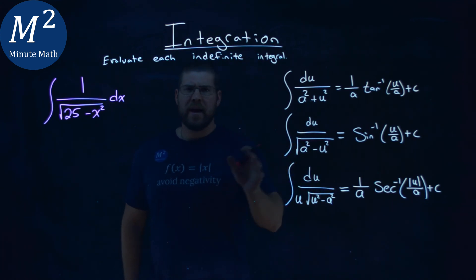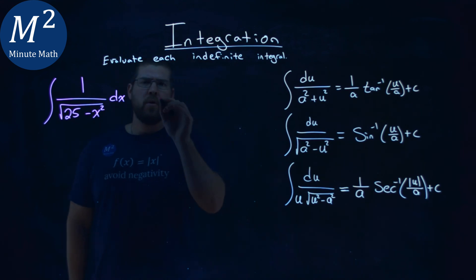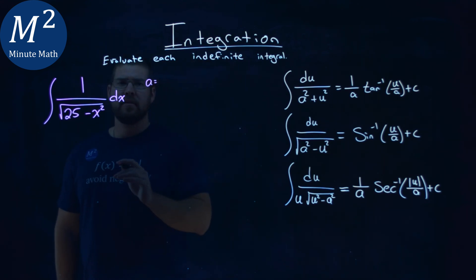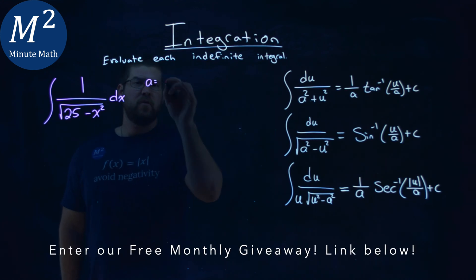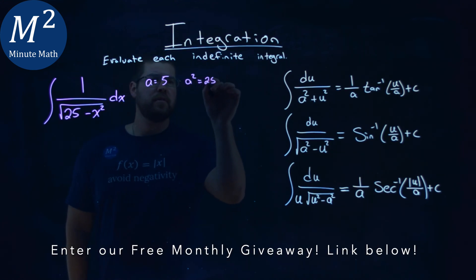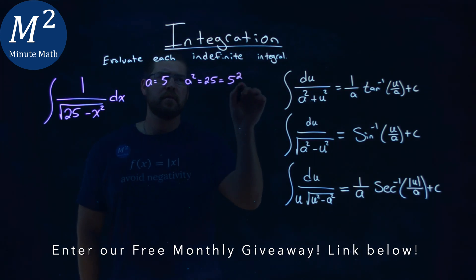So let's go find what an a value and a u value can be. If we set our a value here, it has to equal, well, a squared is equal to 25. It kind of lines up. So if a is 5, a squared is equal to 25, or 5 squared.